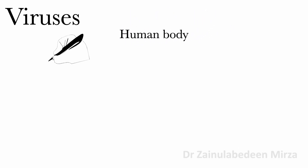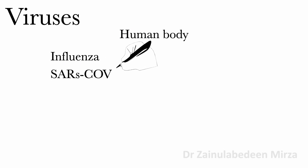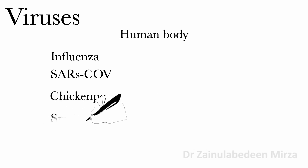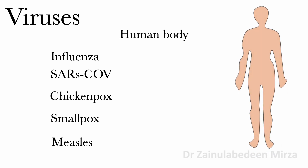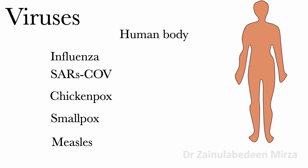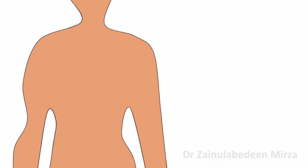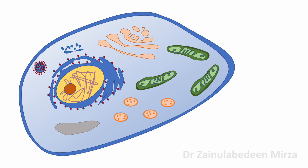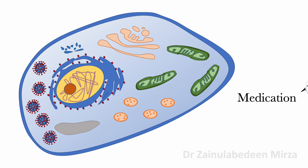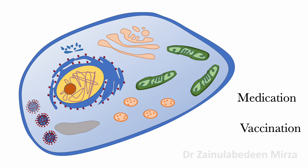Many viruses cause diseases and harm to the human body, such as influenza, SARS-CoV-2, chickenpox, smallpox, and measles. Viruses can invade healthy cells and multiply from these invaded cells. These host cells are places where viruses reproduce. Sometimes it is difficult to fight viruses with medication. One way to prepare the body against some viruses is to train the immune system by vaccination. Vaccination helps prepare the body to fight viruses.